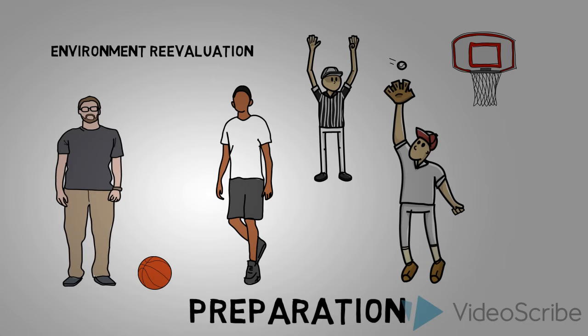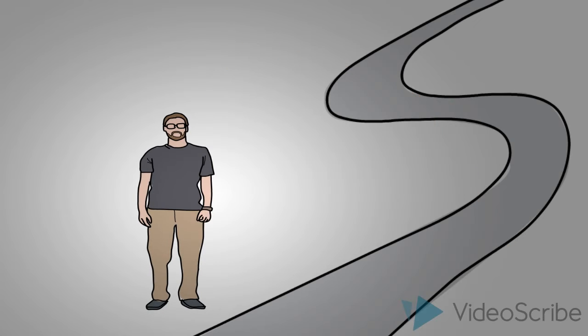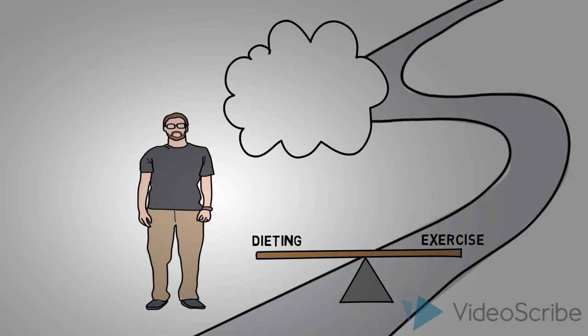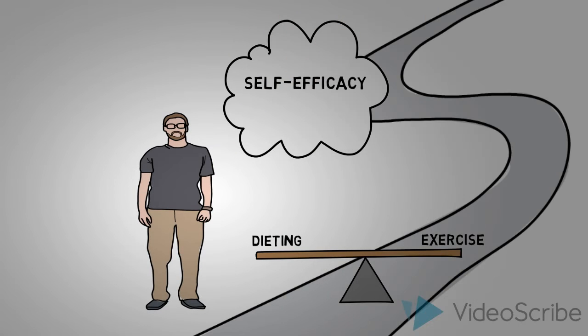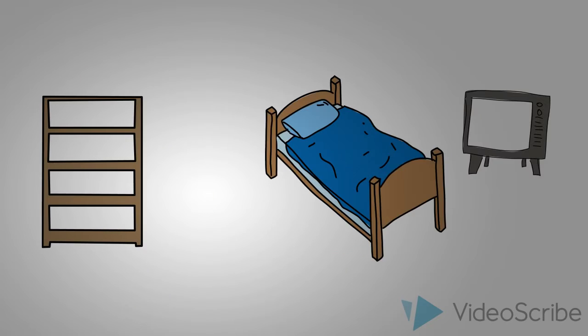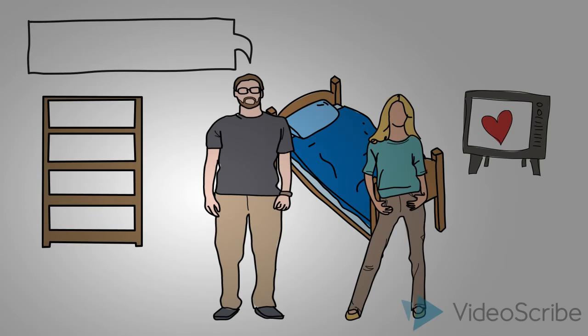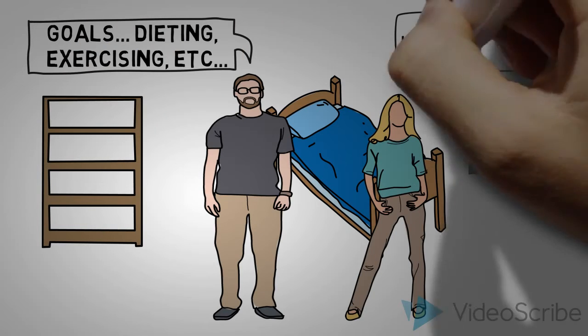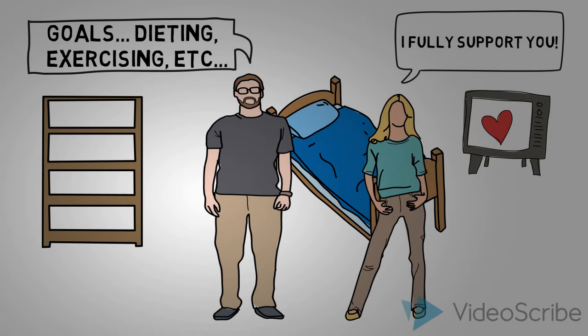This leads him into the preparation stage, where he begins to think about how he could lose the weight. His self-efficacy begins to increase as he goes through the next processes of change, social and self-liberation. He discusses his future goals of losing weight with his wife and coworkers, and realizes that the people around him would support this change, and then begins to believe in himself.